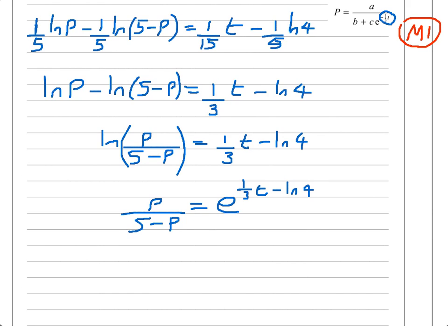So P divided by 5 minus P is all equal to, and then this becomes e to the 1 third of t minus the natural logarithm of 4. You can still see that I still need to get rid of at some point. I still need to rearrange this, get rid of the denominator, for example, but I'm getting there bit by bit. So I'm going to do two things now. The first thing I'm going to do is I'm just going to write this as e to the 1 third of t. Now I'm going to write this as divided by e to the natural log of 4.